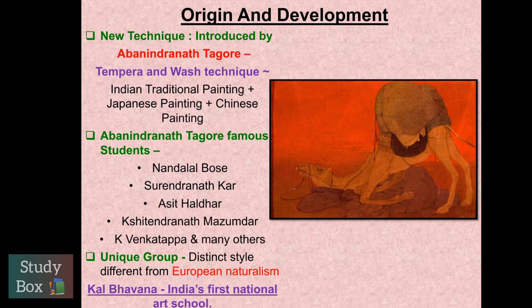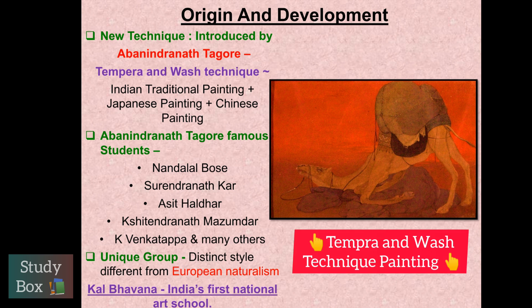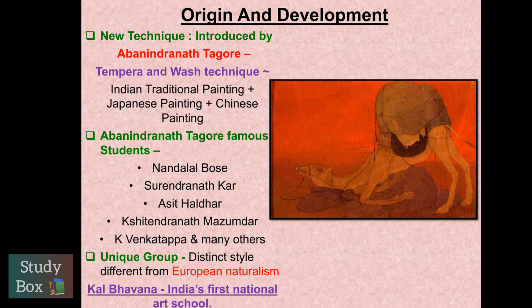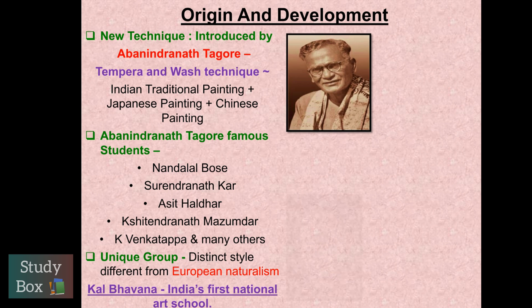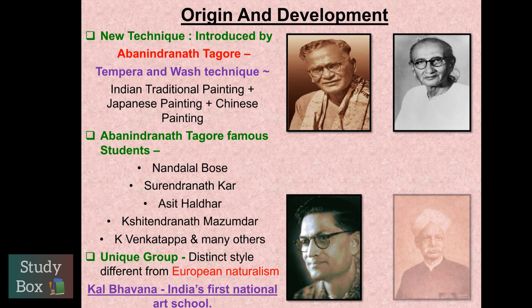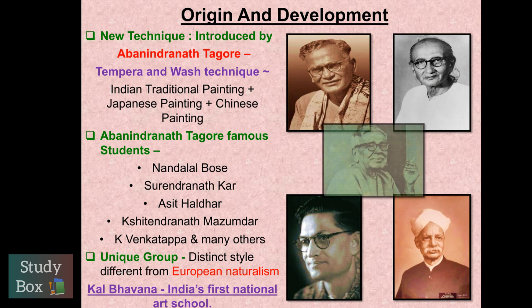Abanindranath Tagore introduced the wash technique, which was a mixture of Indian traditional painting, Japanese painting, and Chinese painting - this technique was made from 3 types of paintings. Through this technique, he reached some famous students. They were: Nandlal Bose, Surendra Nath Kar, Asit Kumar Haldar, Shailendra Nath Mazumdar, and K. Venkatappa, among others - these are the most famous students.